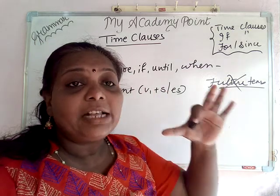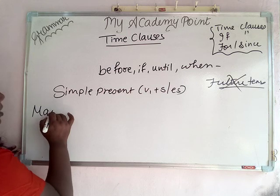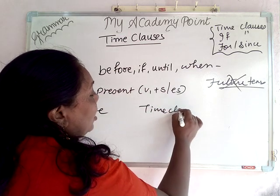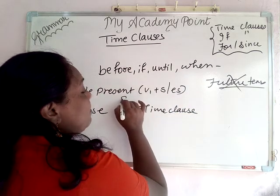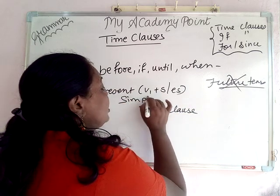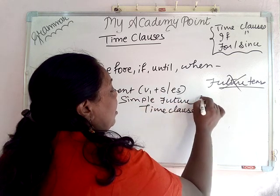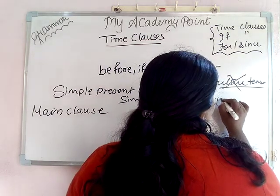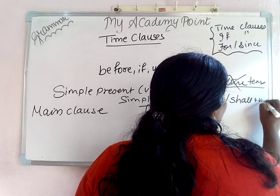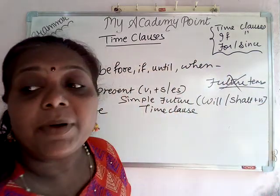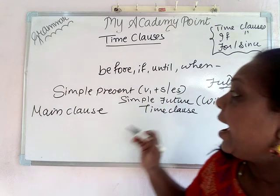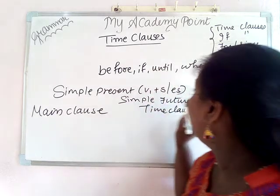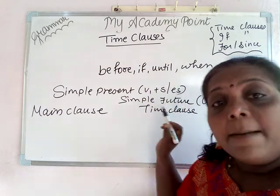The time clause has two types. The first part is the main clause, and the second part is the time clause. In the main clause we will use the simple future. The formula for simple present is V1 plus S or ES, and simple future is will or shall plus V1.